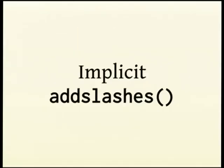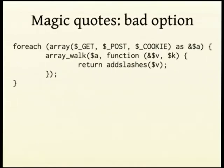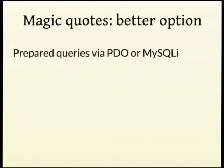Basically, all magic quotes does is implicitly call add_slashes on each GET and POST variable, which really doesn't work very well. But if you really want that behavior, you can just loop over the GET, POST, and cookie super globals and use the new anonymous function capabilities added in 5.3 to add-slash everything. The better option, of course, is to use prepared queries via PDO or MySQLi if you're in the MySQL world.